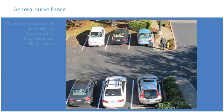A general surveillance objective provides a scene overview that offers situational awareness with reasonable detail for following a situation. It is possible to view the behavior of individuals, but neither recognition nor identification of persons is possible. Vehicle make and model may be safely identified.